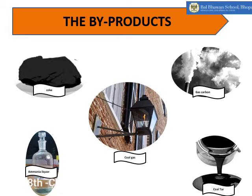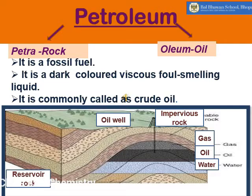These byproducts are very useful: coke is used as an industrial fuel, is considered the purest form of carbon, and is used as a reducing agent in extracting metals. Coal gas is used as an industrial and domestic fuel. Gas carbon is used for making electrodes. Ammonia liquor is used for making nitrogenous fertilizers. Coal tar itself contains many compounds which are separated by fractional distillation and used in textile industries, paints, and medicines.